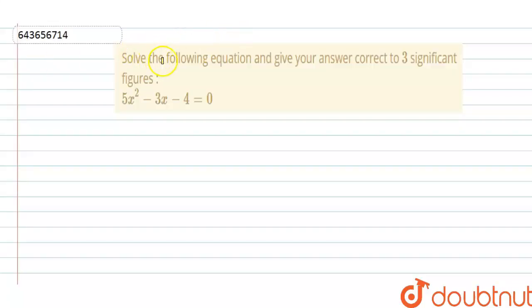Hello everyone, the question says that solve the following equation and give your answer correct to three significant figures. 5x² - 3x - 4 = 0 is the quadratic equation.